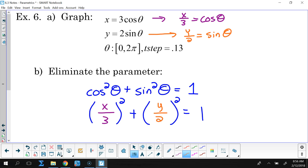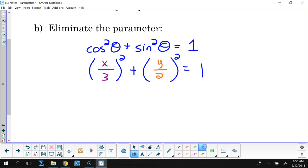Now I just have to do the algebra. X squared over 9 plus y squared over 4 is equal to 1.